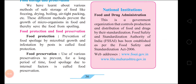The organization to look after food safety is FDA — Food and Drug Administration. FDA is a national government organization that controls production and distribution of food and drugs by their standardization. As per the Food Safety and Standardization Act 2006, FSSAI — the Food Safety and Standardization Authority of India — has been established. If you check food packets, you will see the FSSAI mark, which means that particular food is safe to consume.